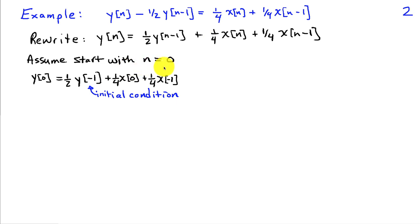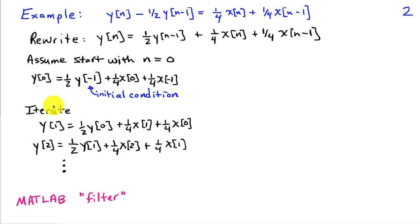If we start with n equals 0, then we can write that y[0] equals 1/2 y[-1] plus 1/4 x[0] plus 1/4 x[-1]. We can iterate this process, so now that we've computed y[0], we can compute y[1] as 1/2 y[0] plus 1/4 x[1] plus 1/4 x[0]. Given y[1], we can compute y[2] as 1/2 y[1] plus 1/4 x[2] plus 1/4 x[1], and so on.